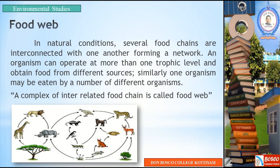One food chain interrelated with other food chains — all food chains interrelated together is called a food web. A complex of interrelated food chains is called a food web.